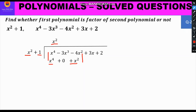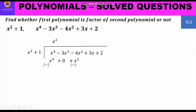For subtraction, we change the signs: +x⁴ becomes -x⁴ and +x² becomes -x². Then x⁴ and -x⁴ cancel to give 0. For -4x² and -x² we get -5x². We bring down -3x³ and +3x, giving the new dividend: -3x³ - 5x² + 3x.